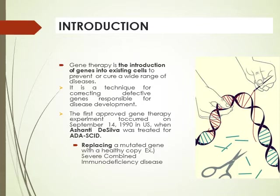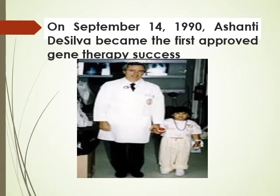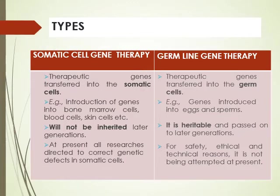ADA-SCID involves replacing a mutated gene with a healthy copy of the gene. SCID stands for Severe Combined Immunodeficiency Disease. This girl is Ashanti De Silva — she was suffering from SCID, and that disease was cured with the help of a gene on September 14, 1990.